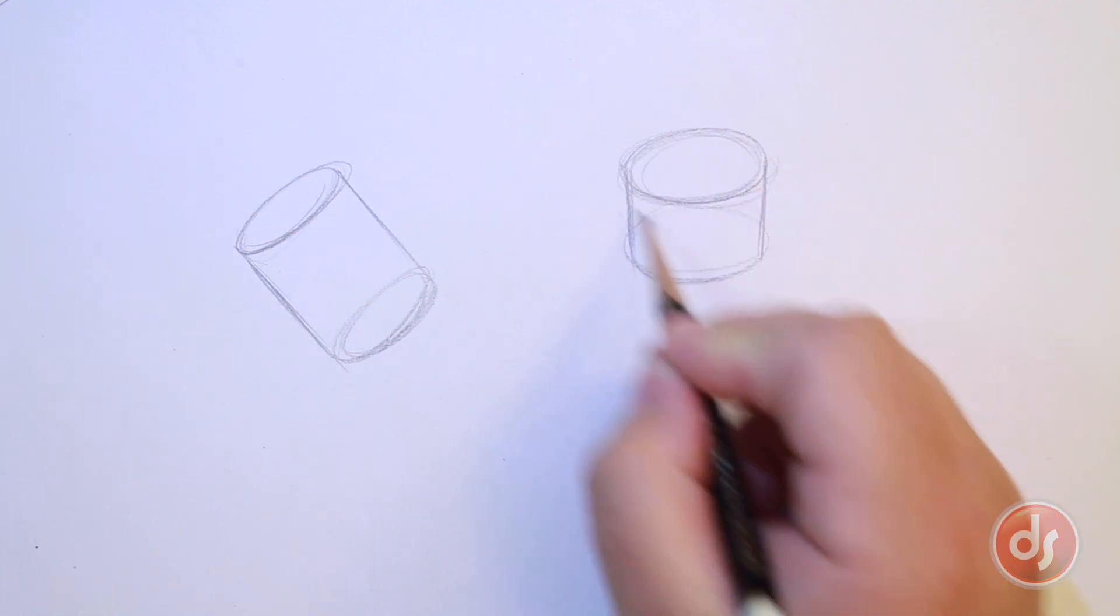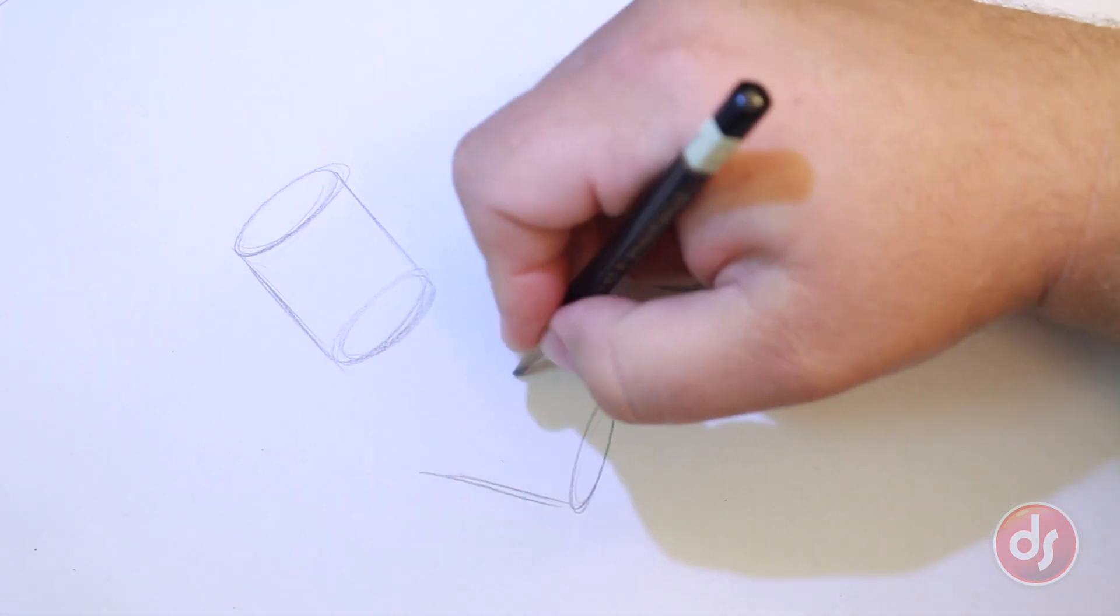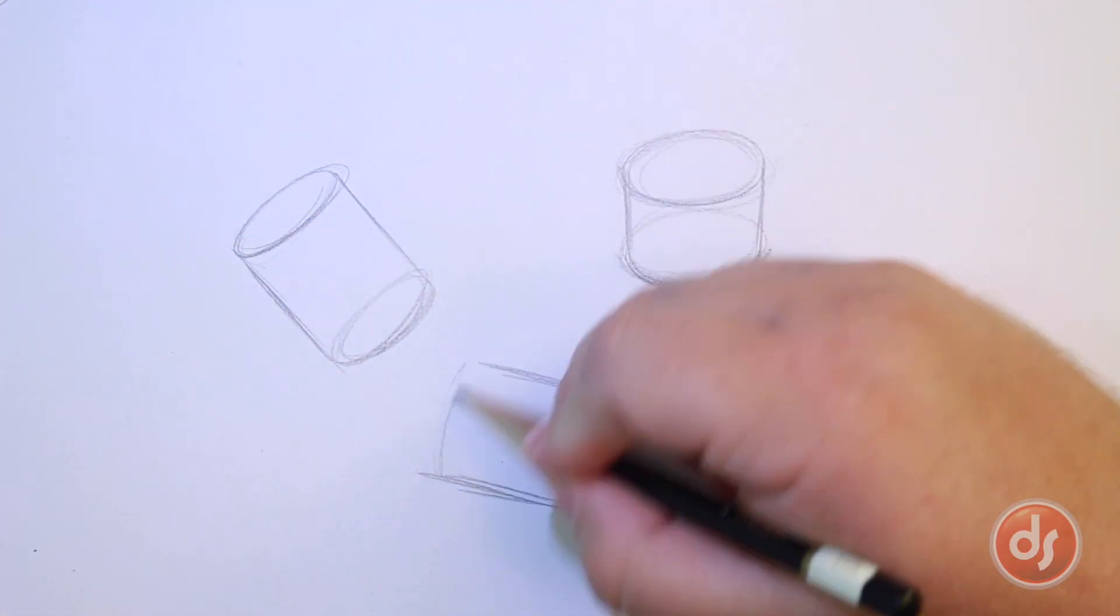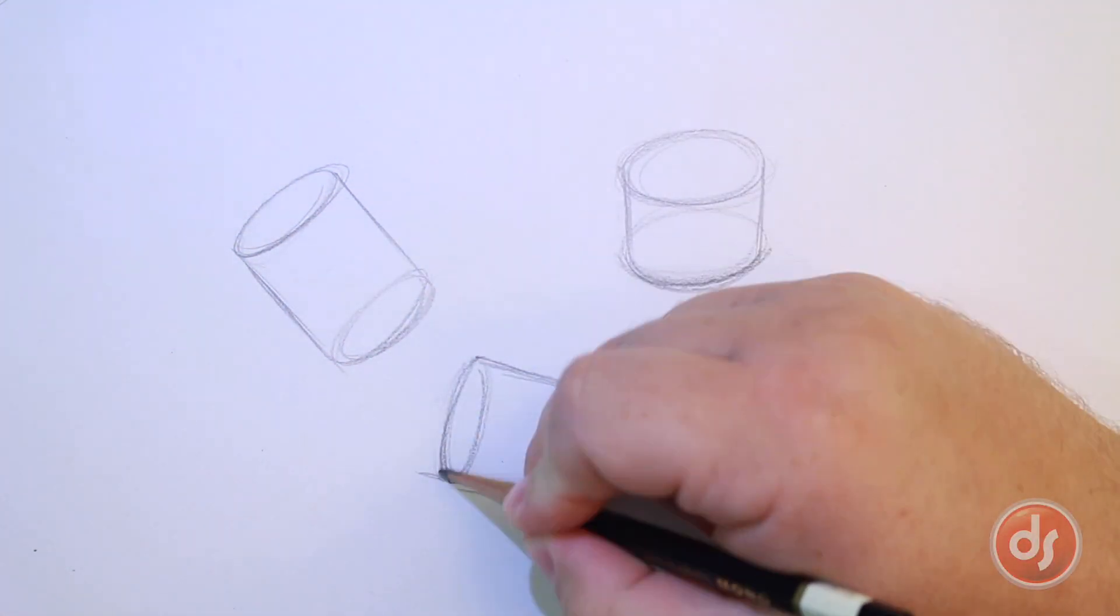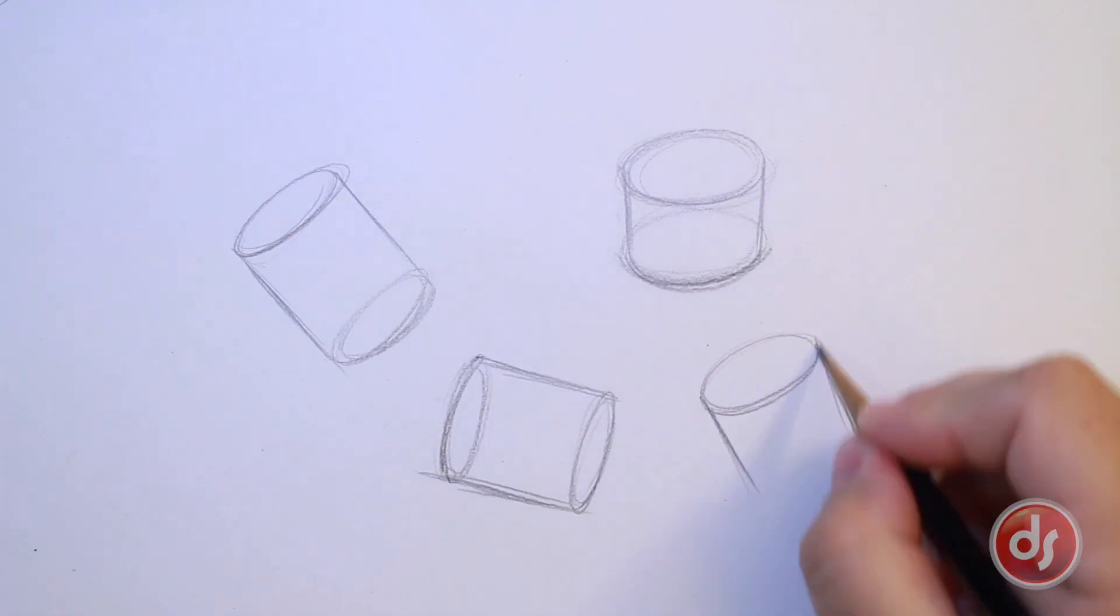Change the angle and degree of the ellipses and the length of the cylinders to create a sense that the cylinders are moving in space. When you draw the second ellipse, always draw through it like the first. This will give the ellipse roundness and avoid those pinched corners.